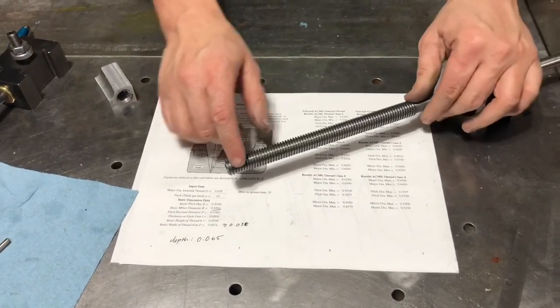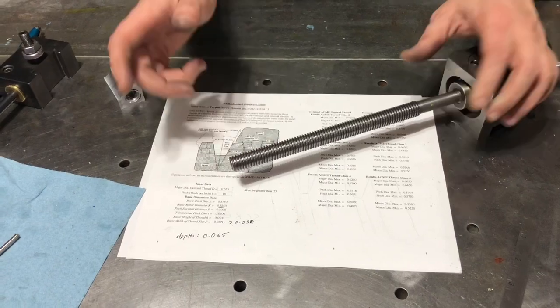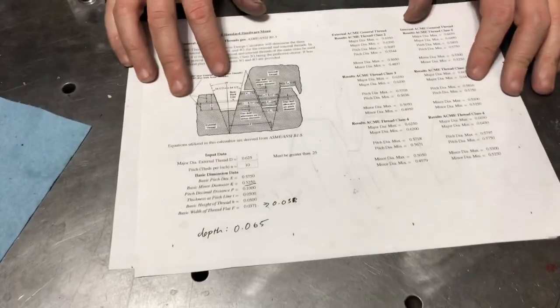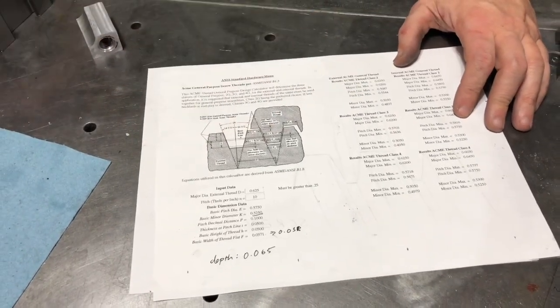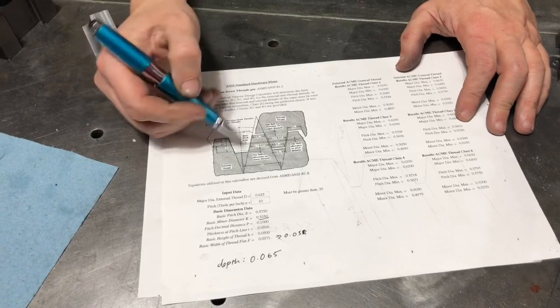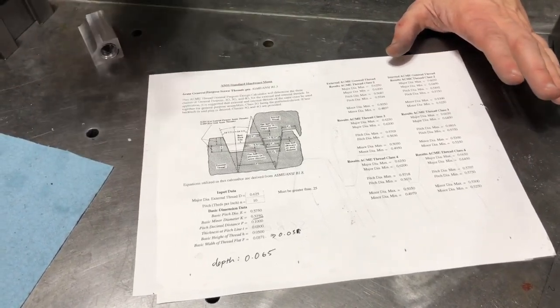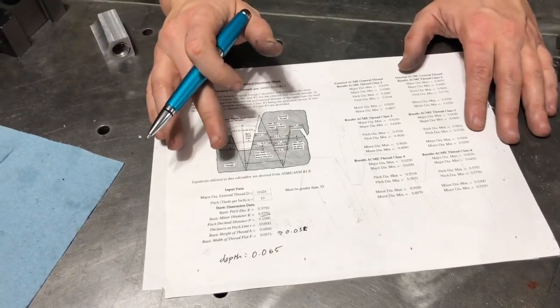So this is a 5/8-10 left-hand Acme. Now if we look up in the machinery's handbook, it's going to give you all the fun little thread geometry, a little bit of pitch diameters, all this really great fun stuff, which is obviously where we need to start making a nut here.